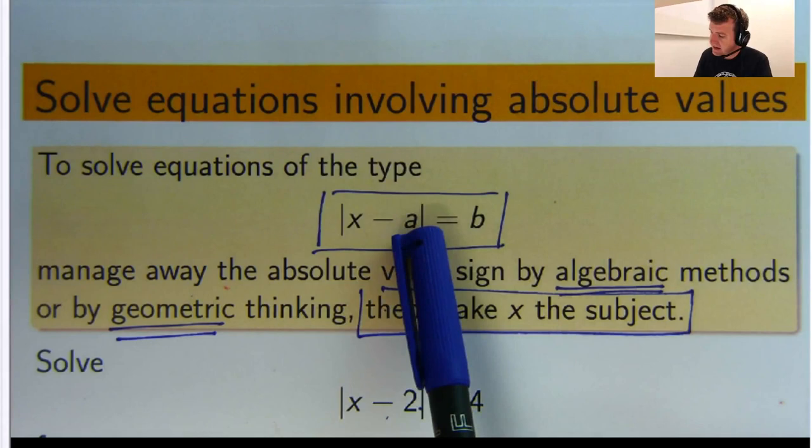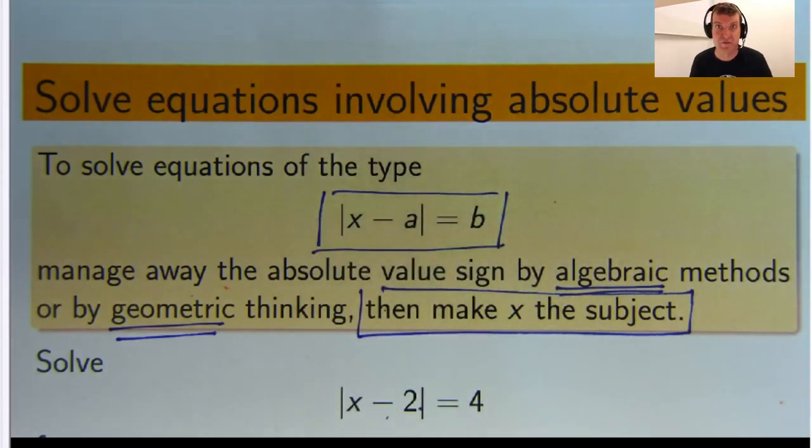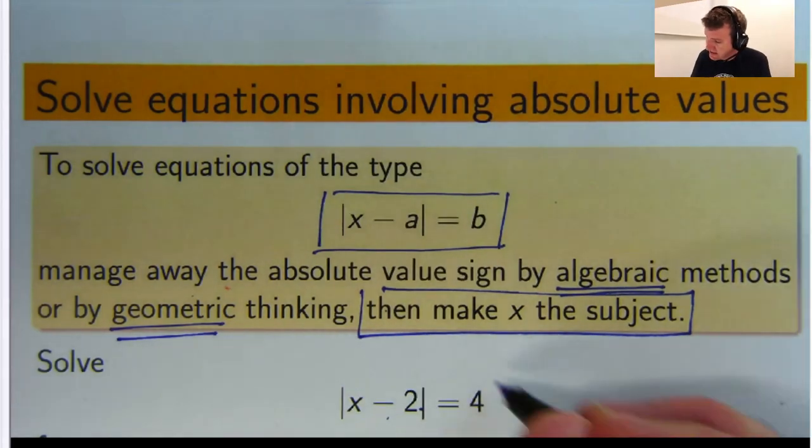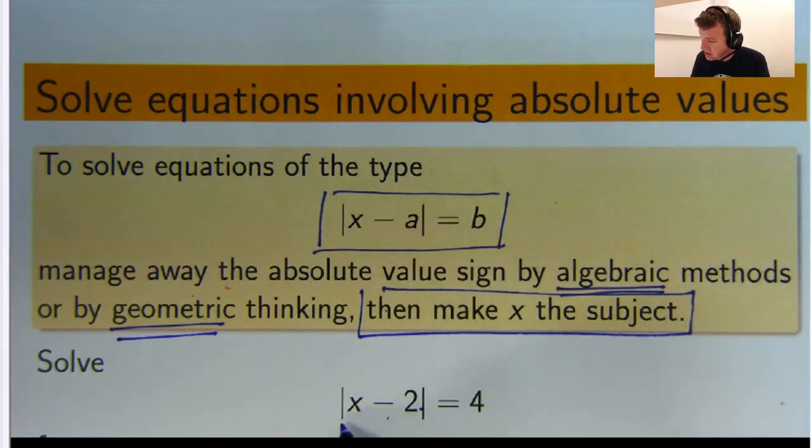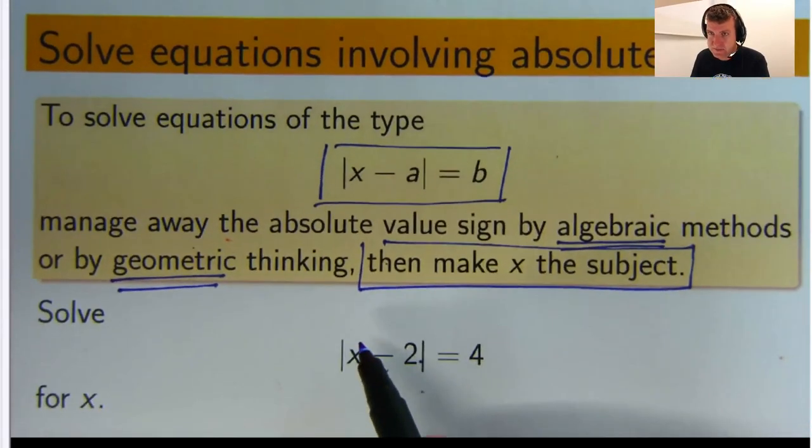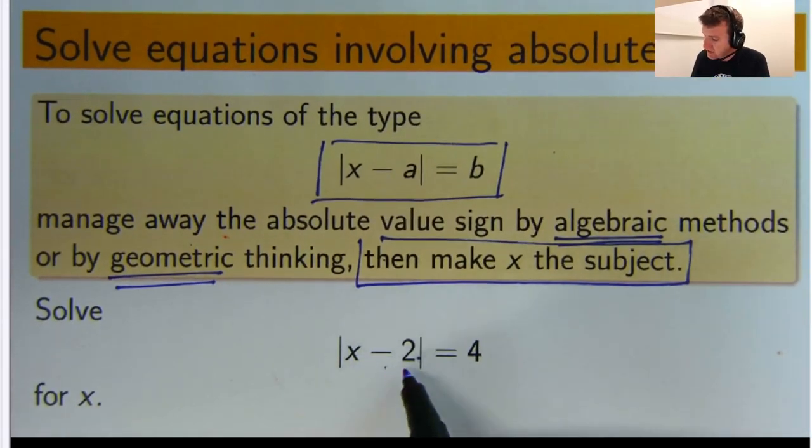So here a is a number, b is a positive number, and x is the thing you want to find. But before we get to this, what do these equations actually mean? Well let me give you a definite example here. Let's look at this example here. The absolute of x minus 2 equals 4.